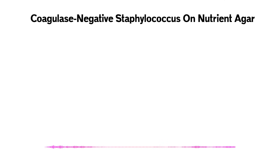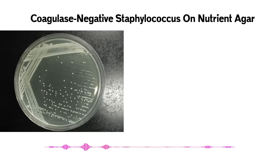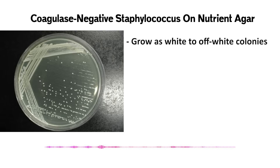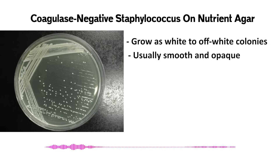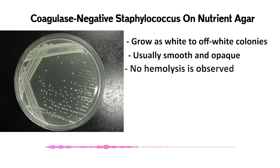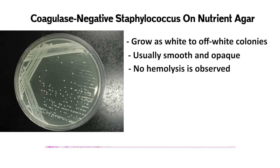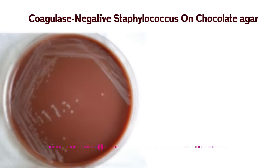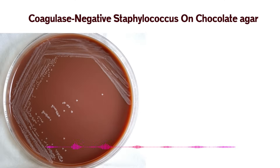What about nutrient agar? It's simpler — the textbook doesn't detail CoNS specifically on it, but based on general properties you'd expect them to grow. Standard growth: probably white to off-white colonies, smooth, opaque, nothing really distinctive. And obviously no hemolysis because there's no blood. It supports growth but doesn't give those key visual clues like SBA does.